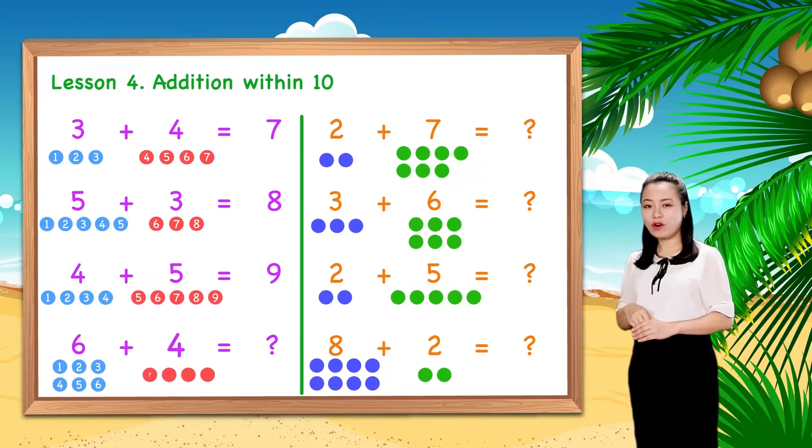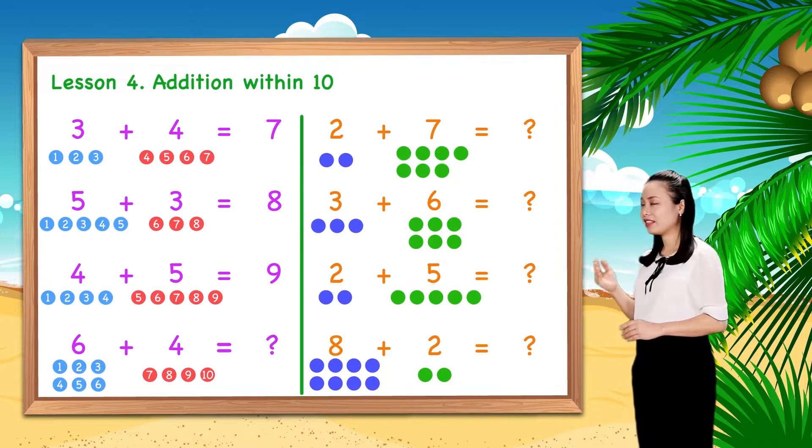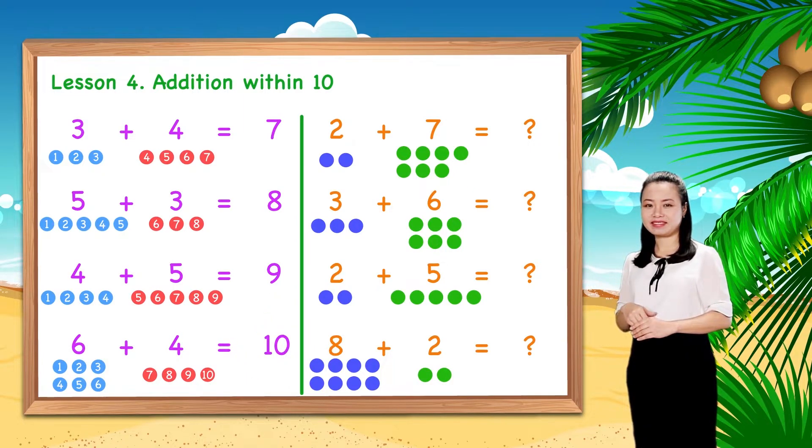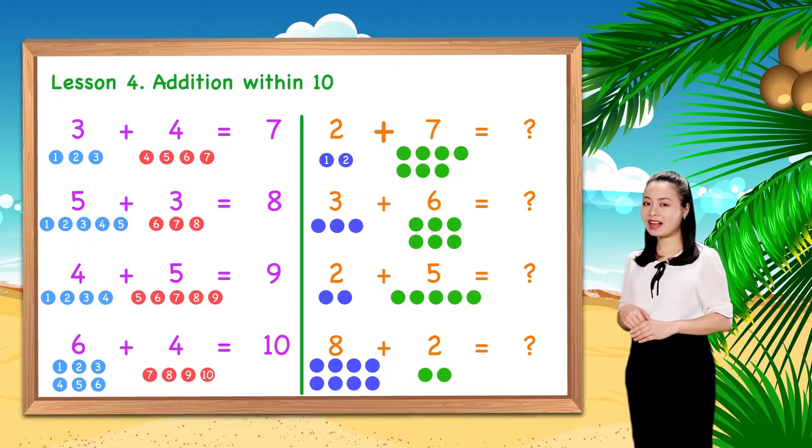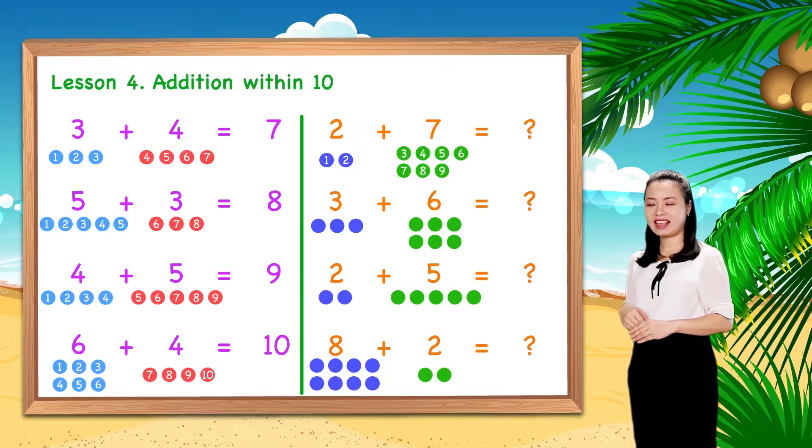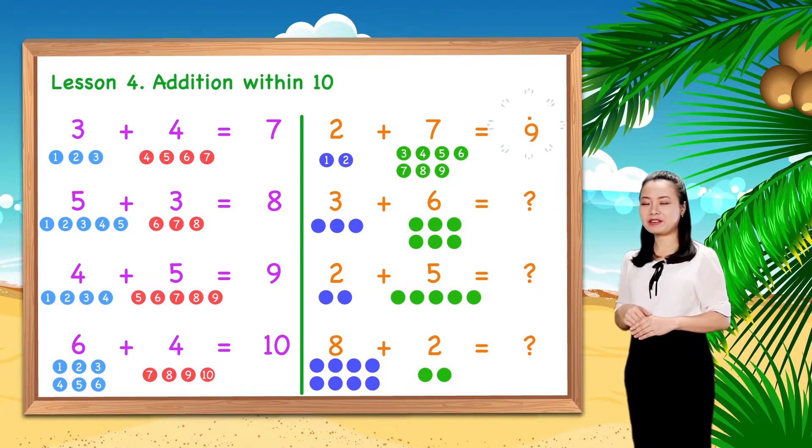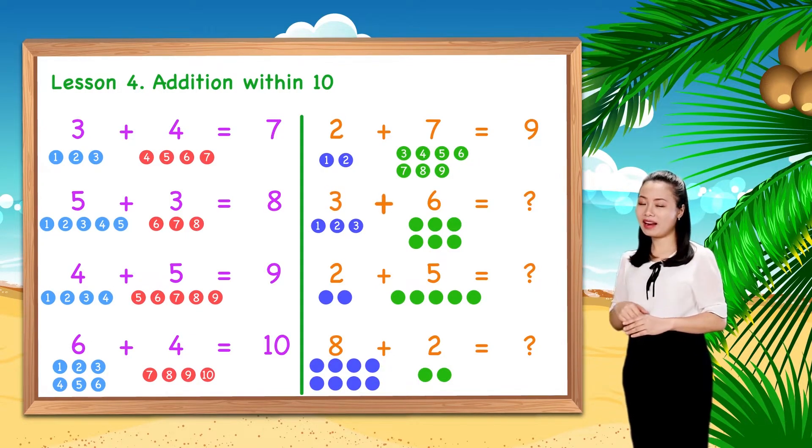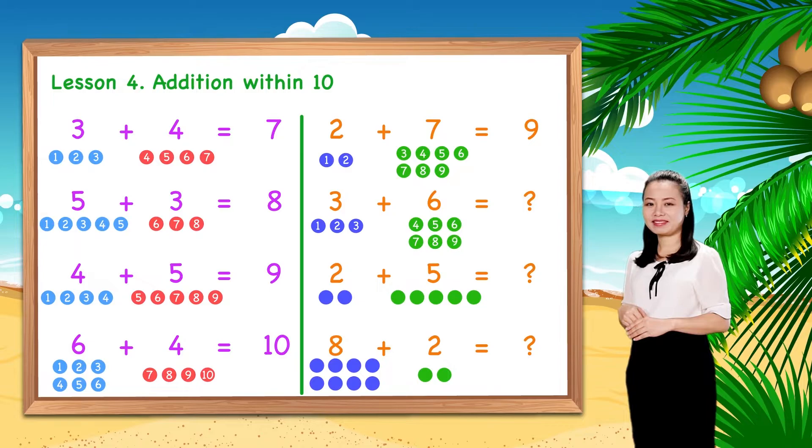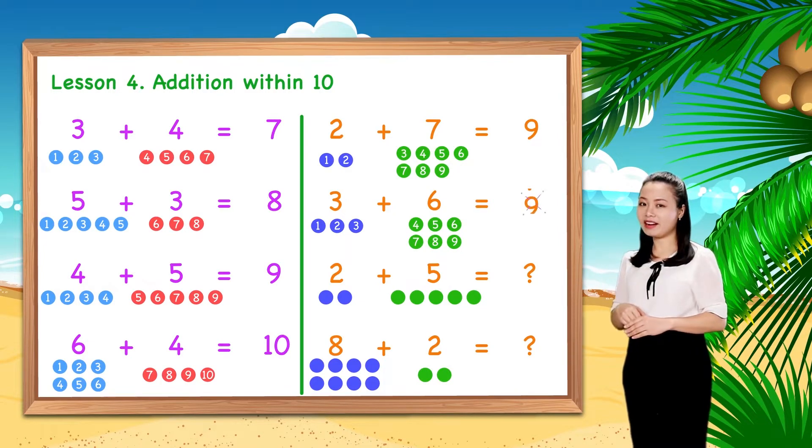6 plus 4 equals 10. Next, 2 plus 7 equals 9. 3 plus 6 equals 9.